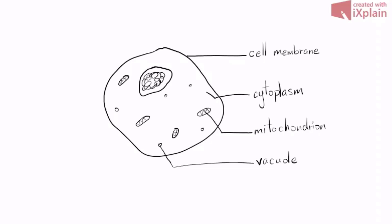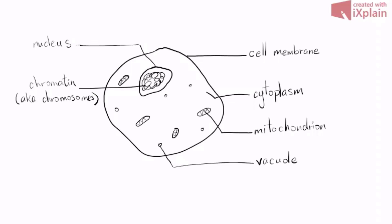We have two more things to label on this side. This is your nucleus. The material inside the nucleus is called chromatin — also known as chromosomes. Later on, as we look at cells, we will see under what conditions we use the word chromatin versus chromosomes.